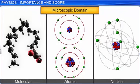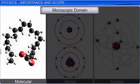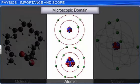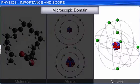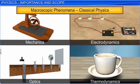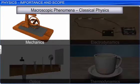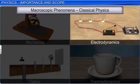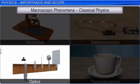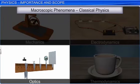Whereas, the microscopic domain deals with molecular, atomic and nuclear phenomena. In our study of physics, we will look at macroscopic phenomena under classical physics that includes mechanics, electrodynamics, optics and thermodynamics.